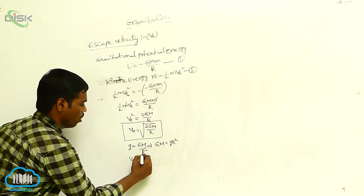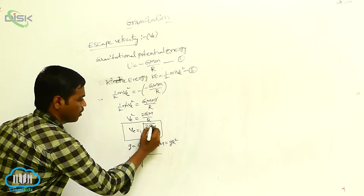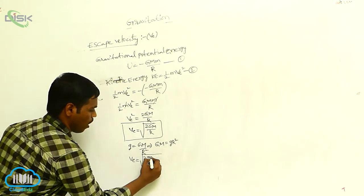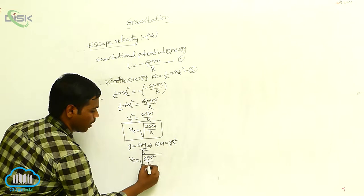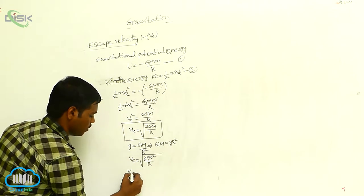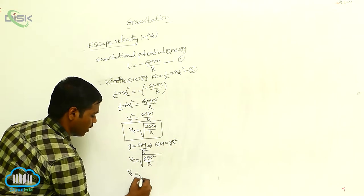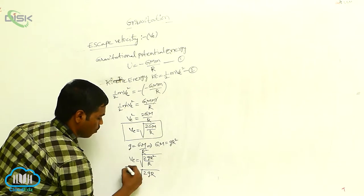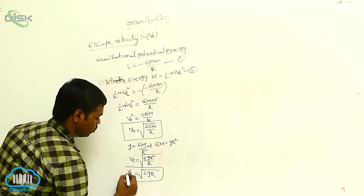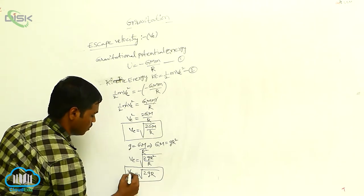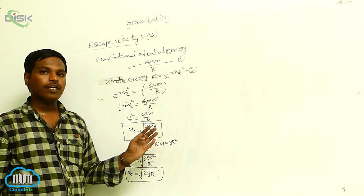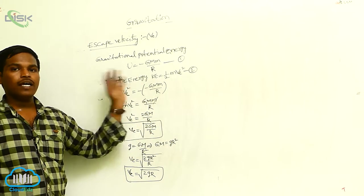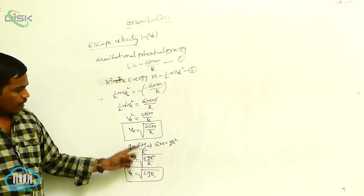Since GM equals g·R², substituting here: Ve is equal to the square root of 2·g·R²/R, that is Ve is equal to the square root of 2gR. This is the escape velocity of an object from the Earth's surface.